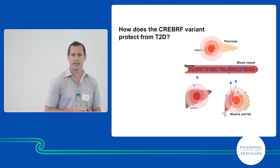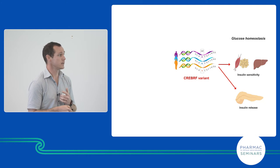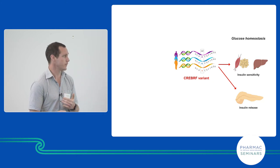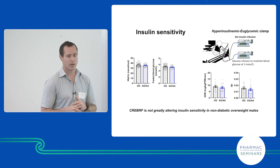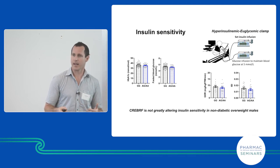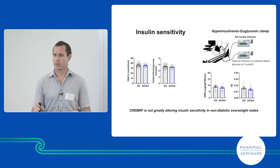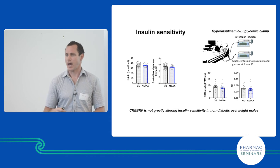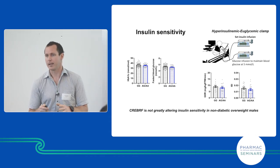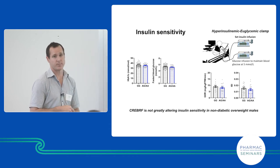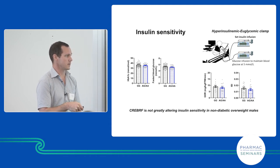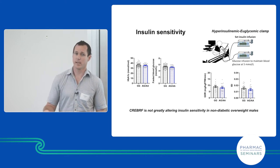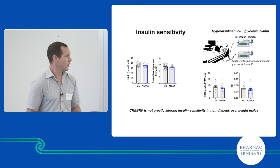These are all aspects the CREB3RF variant could be targeting to change disease risk. We asked whether the CREB3RF variant changes insulin sensitivity or insulin release to protect from type 2 diabetes. We ran a euglycemic hyperinsulinemic clamp — basically infusing insulin at a set dose for everyone, then also infusing glucose to bring blood glucose back to a normal level. The more glucose you need to infuse, the more insulin sensitive someone is. We found no difference between the groups, which was quite surprising, because we thought people with the CREB3RF variant would be more insulin sensitive due to their greater lean mass.